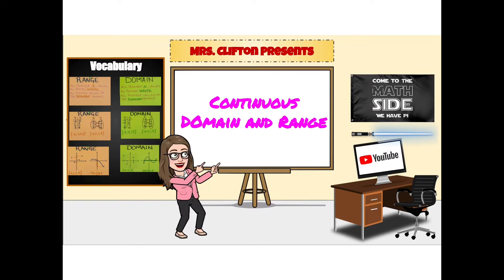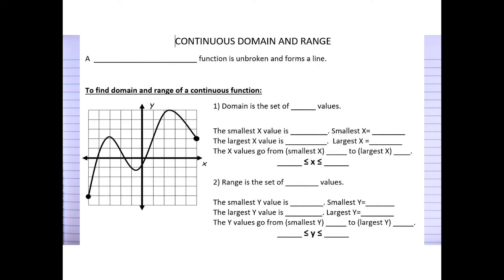In this video we're going to talk about how to find the continuous domain and range of graphs. First of all, the word 'continuous' comes from the idea that our equation is unbroken and forms a line — it continues from one point all the way to the end point without breaking.